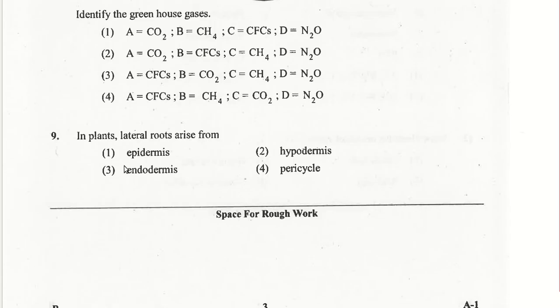In plants, lateral roots arise from the pericycle. In dicot roots, not only do lateral roots arise from the pericycle, but the cambium also arises from the pericycle. So the answer for question 9 is the fourth option — pericycle.